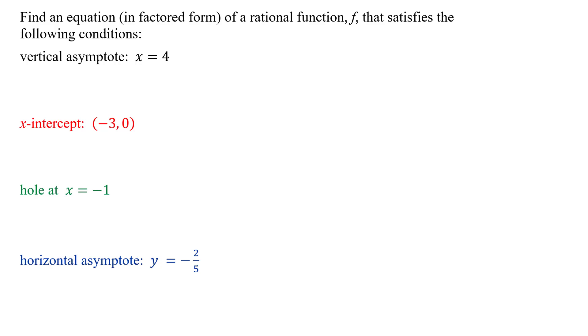Normally in these problems, we're given the rational function and have to come up with this information or graph the function. So in this problem, I'm basically working backwards. I need to find my function f(x) that produces these characteristics.